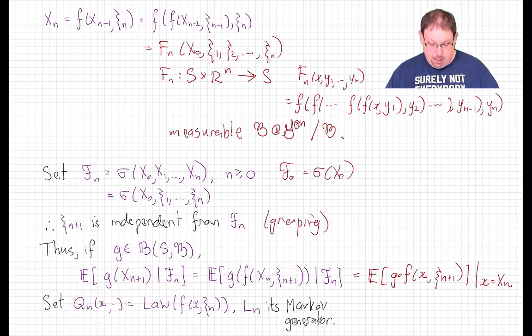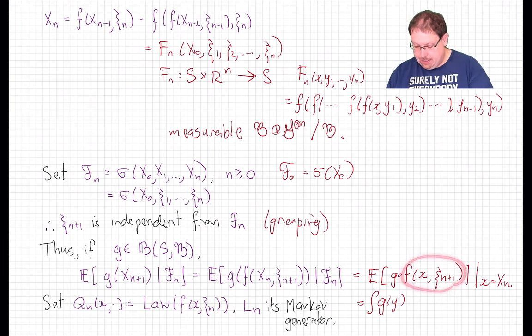That probability kernel has a Markov generator, which you get just by integrating a bounded measurable function against this measure to give out a function of x. Now, in fact, what we've got written right here, just by the change of variables theorem, is just such an integral. It's the integral of, say, g(y) against the law of f(x, ξ_n).